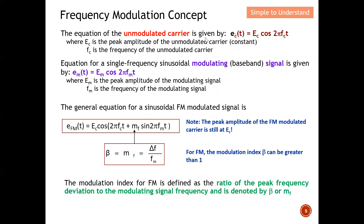The equation of the unmodulated carrier is given by a typical sine or cosine waveform — the carrier without any information is governed by this equation, where EC is the peak amplitude of the carrier and fC is the frequency of the carrier. The equation for a single frequency modulating signal — the signal we want to send — is governed by its own equation, where Em is the peak amplitude of the modulating signal and fm is the modulating frequency. Combining these two gives the frequency modulated signal equation.